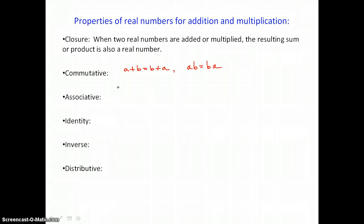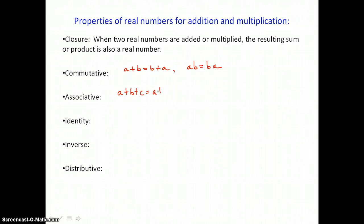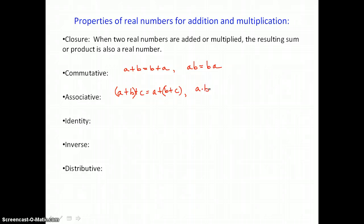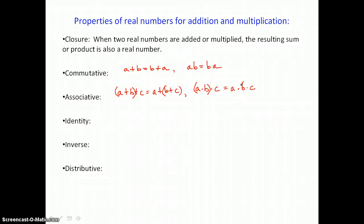The associative property involves grouping or associating terms or factors. If we want to add A plus B plus C, we can first add A plus B and then add C, or we could add B plus C and then add A. The associative property holds for multiplication also — we could multiply A times B first and then multiply by C, or multiply B times C and then multiply by A.